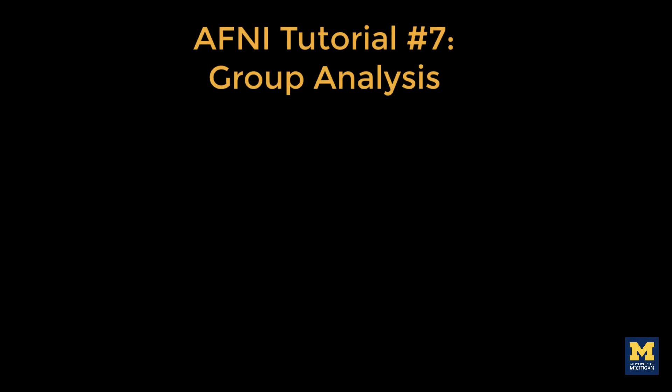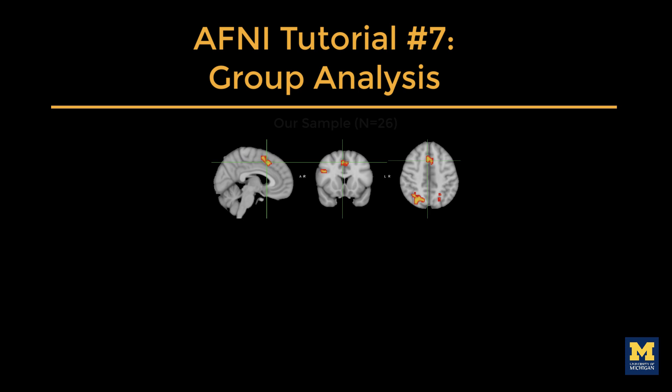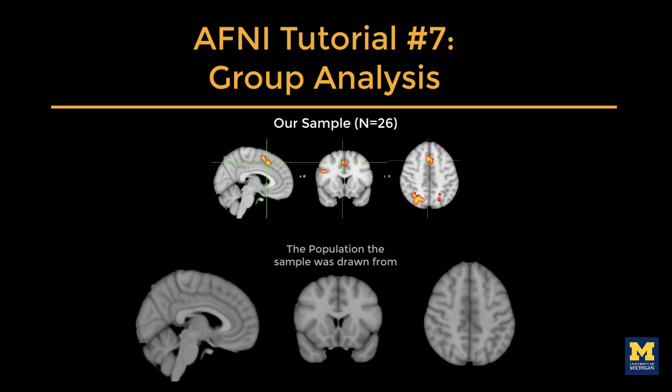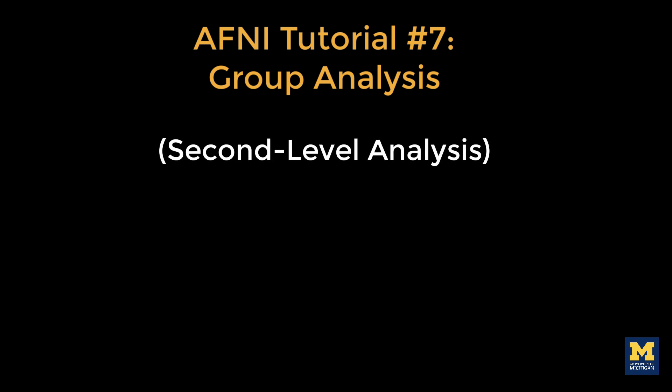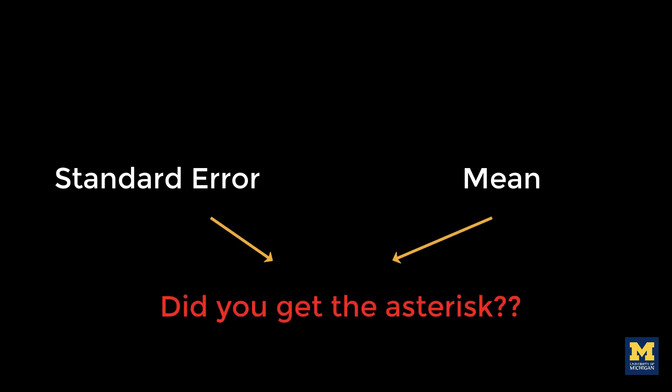Our goal in analyzing this data set is to generalize the results to the population that the sample was drawn from. If we see changes in brain activity in our sample, can we say that these changes will be likely seen in the population as well? To test this, we will run a group-level analysis, also known as a second-level analysis. In AFNI, this means that we calculate the standard error and the mean for a contrast estimate, and then test whether the average estimate is statistically significant.